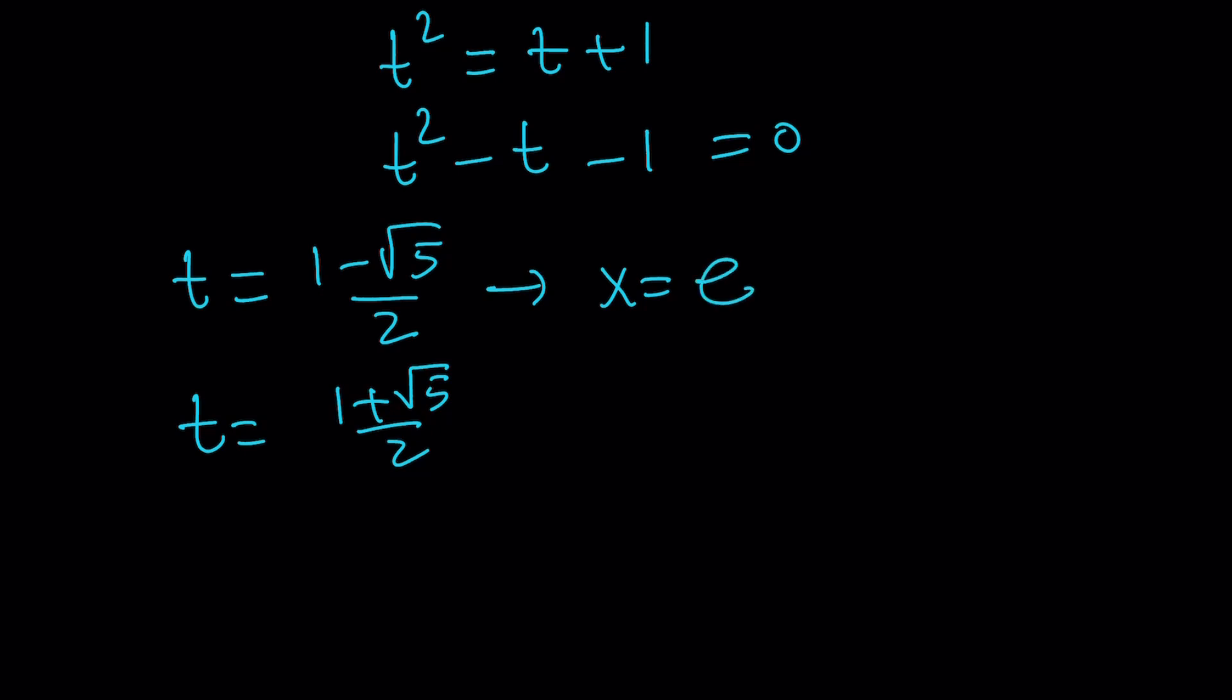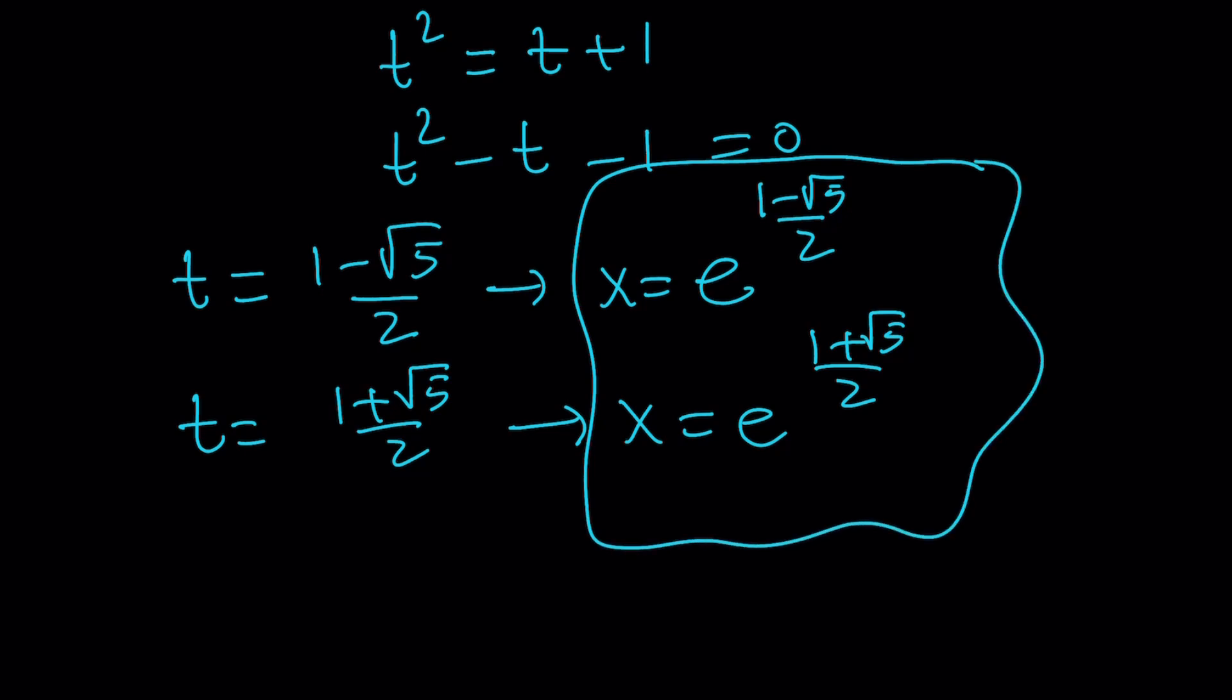You can write the x here as e to the power of 1 minus root 5 over 2. And here you can write it as e to the power of 1 plus root 5 over 2. So those are going to be the solutions just like before. There are two solutions. They're both valid.